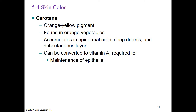Carotene is an orange-yellow pigment found in orange vegetables like pumpkins, squash, carrots, and sweet potatoes. Carotene accumulates in epidermal cells, the deep dermis, and subcutaneous layer. In fair-skinned people who consume very large amounts of carotene, the skin can take on an orange-yellow hue in certain areas. Carotene can also be converted to vitamin A, which is required for maintenance of your epithelia.